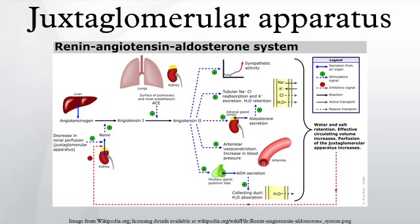Adenosine vasoconstricts the afferent arteriole via A1 receptors and vasodilates afferent arterioles via A2 receptors, which decreases GFR. Also, adenosine inhibits renin release in juxtaglomerular cells via A1 receptors on JG cells using a Gi pathway.